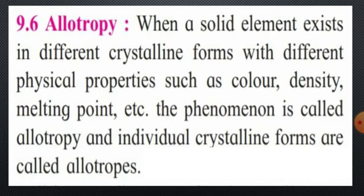The individual crystalline forms are called allotropes. For example, carbon exists in three allotropic forms, but the allotropes of carbon have been removed from the current year's topic. So we are going to study the allotropes of phosphorus. When a solid element exists in different crystalline forms with different physical properties, that phenomenon is called allotropy and the individual crystalline forms are called allotropes.